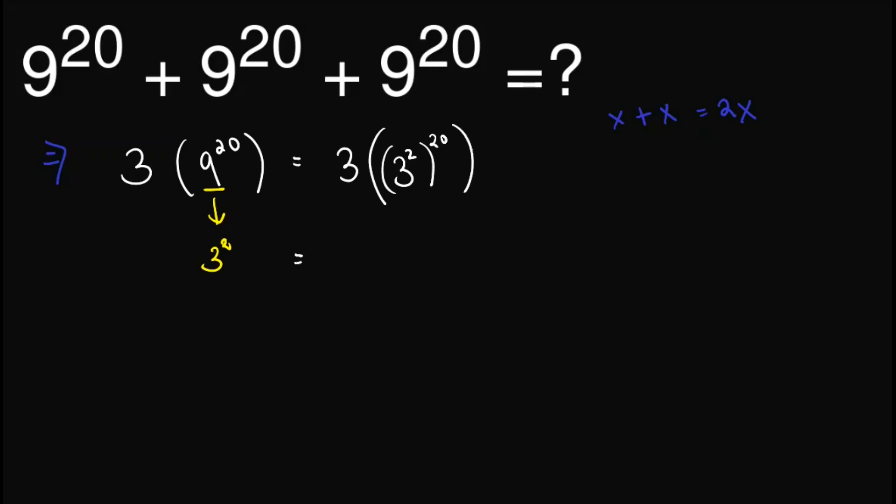By laws of exponents, we simply multiply these two. So we will have 3 times 3 raised to 2 times 20 is 40.